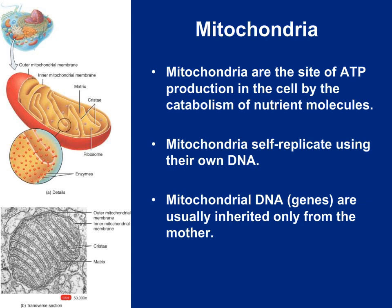Our next organelle is the mitochondrion — mitochondria is plural, mitochondrion singular. The mitochondria are basically the sites of ATP production in the cell, catabolizing large molecules into smaller ones and producing ATP — the energy currency used within the cell. Mitochondria are the powerhouses of the cell. Interestingly, they self-replicate and have their own DNA, which is inherited only from your mother. They are a double-membrane organelle whose job is to convert food energy into ATP.